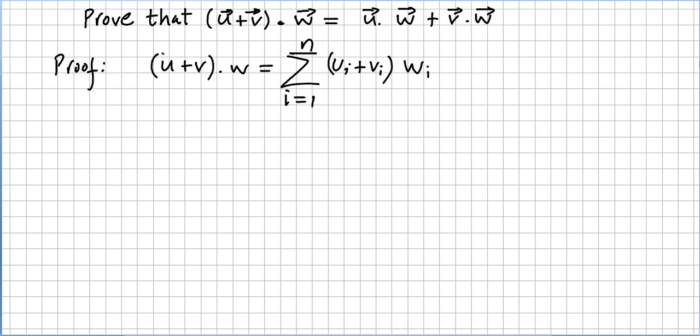So the proof is: u plus v times w. Following the definition, the definition of vector addition is the sum from i equals 1 to n, the components of ui plus vi, inner product with wi is the components of this vector.